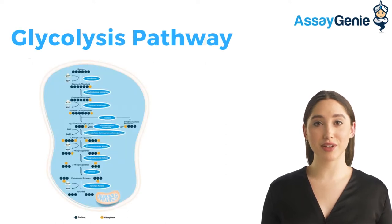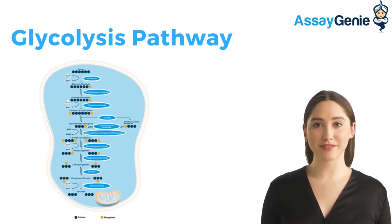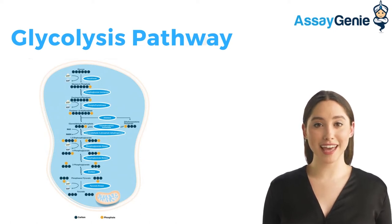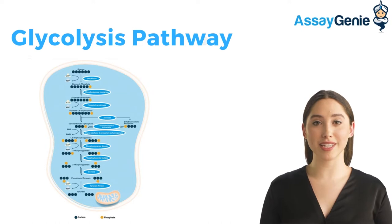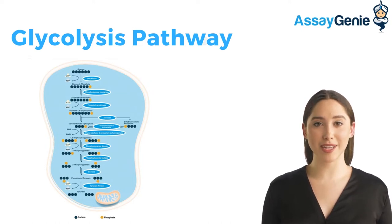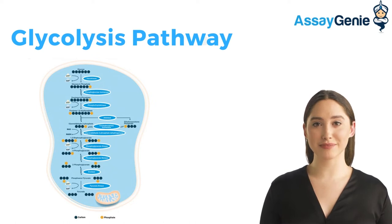Glycolysis occurs in the cytoplasm of the cell. There are two types of glycolysis: aerobic glycolysis and anaerobic glycolysis. Aerobic glycolysis occurs in the presence of oxygen, while anaerobic glycolysis does not require oxygen.